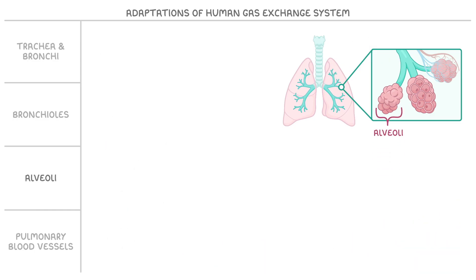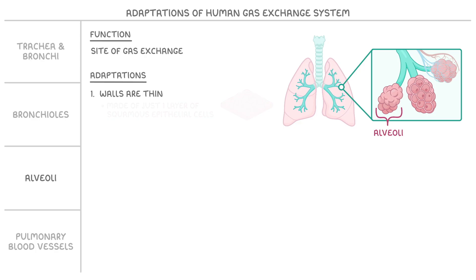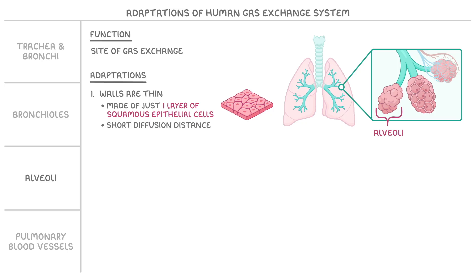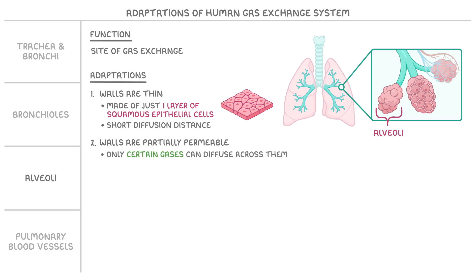Moving on to the alveoli, these are tiny air sacs that function as the site of gas exchange and they have many adaptations for this role. First, the alveoli walls are really thin because they're made of just one layer of squamous epithelial cells, which means there's a really short diffusion distance for gases to cross. Second, these walls are partially permeable, meaning only certain gases can diffuse across them, like oxygen and carbon dioxide.